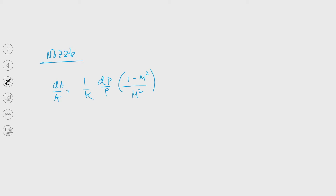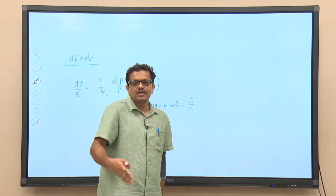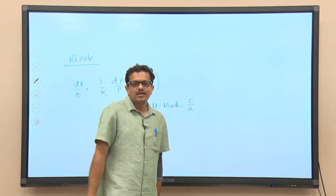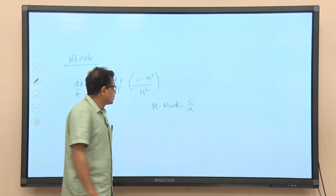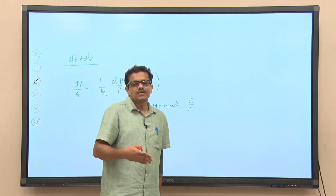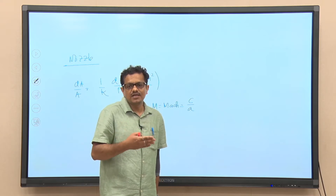We have described the significance of individual terms in the last class. We also discussed that depending on the magnitude of flow velocity — comparing Mach number M, which is c by a — whether the flow is sonic, subsonic, or supersonic, we have different flow configurations: gradually decreasing area, constant cross-sectional area, or gradually increasing area. Today we shall see that mass flow rate of steam is another important quantity, essentially from the perspective of the kinetic energy of steam at the exit of the nozzle.